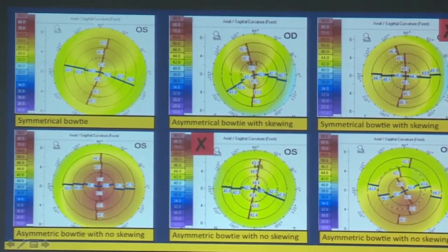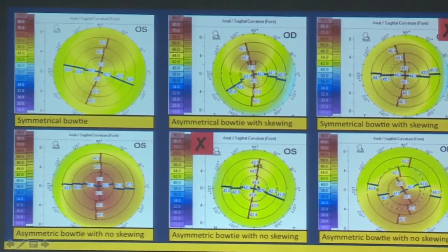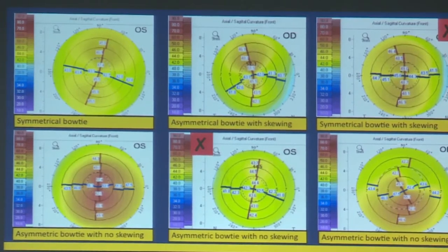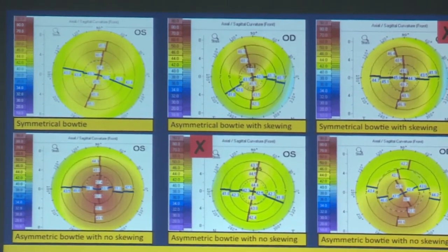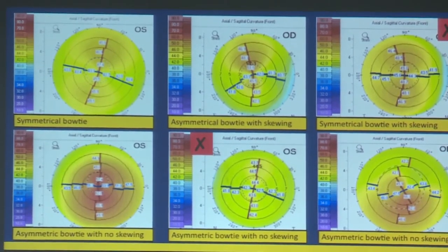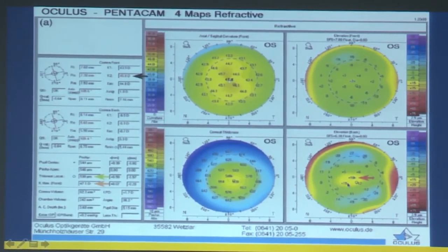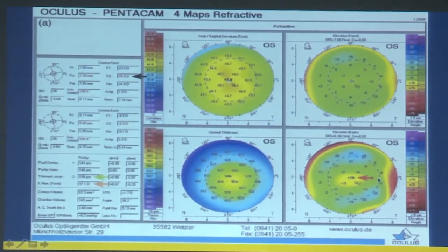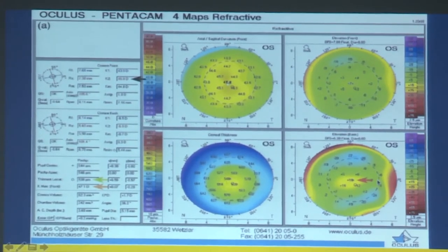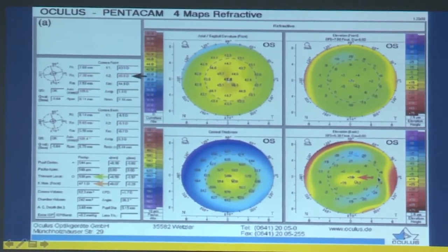In cases where we are not sure whether it's keratoconus, we move from topography to tomography, where we get the posterior elevation map. This is a Pentacam map: the anterior surface looks almost normal, but the posterior elevation appears abnormal.